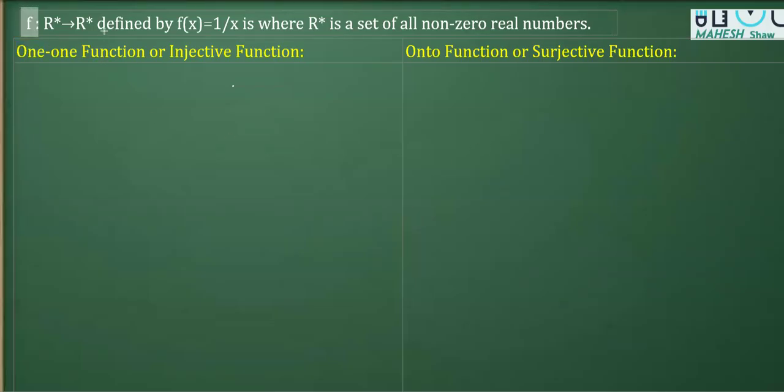In this question, the function f is defined from R* to R*, where R* means the set of all non-zero real numbers. The domain is all real numbers except zero. The definition of the function is f(x) equals one over x. We need to prove whether it's one-to-one, onto, or both.